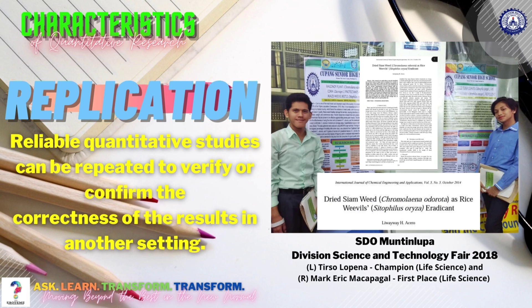Reliable quantitative studies can be repeated to verify or confirm the correctness of the result in another setting. This strengthens the validity of the findings, thus eliminating the possibility of spurious conclusions. For instance, students joining science investigatory projects are fond of reading research papers first in order to be inspired and replicate some of the techniques done by other researchers.